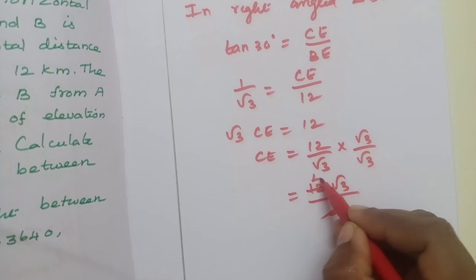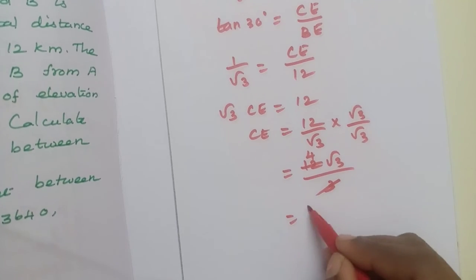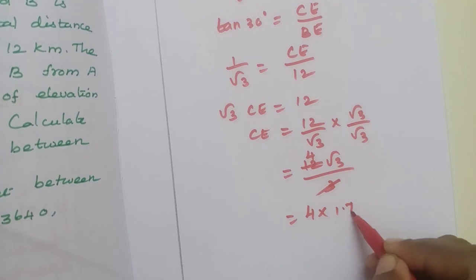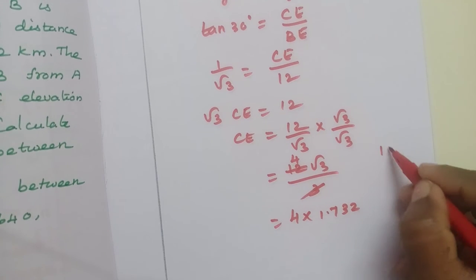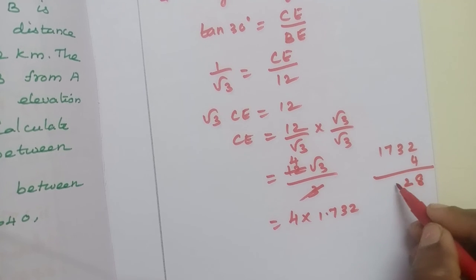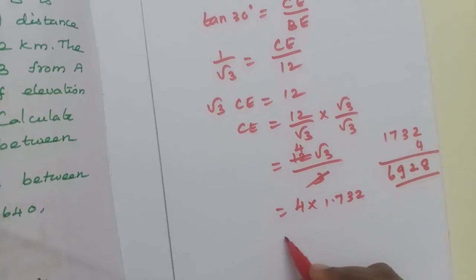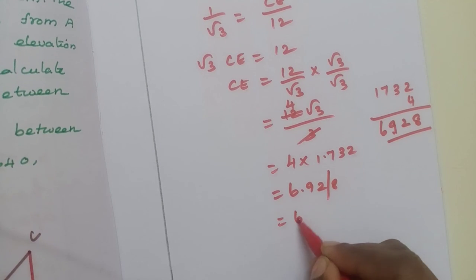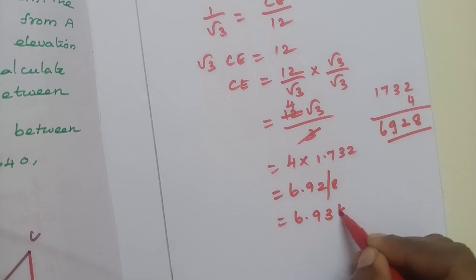3, 4 threes are 12, so 4 into 1.732. 1732 multiply by 4: 8, 2, 9, 6. Point here, so the answer is 6.928, round off 6.93 kilometer.